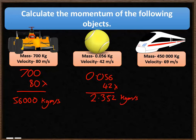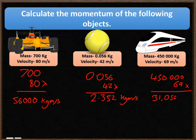The third object is the train — much heavier. Its mass is 450,000 kilograms and its velocity is 69 meters per second, giving a very large momentum of 31,050,000 kilogram meters per second.